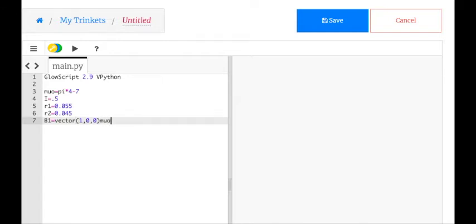And then I'll type in my equation. Mu times i divided by 2 times pi, don't forget parentheses there,